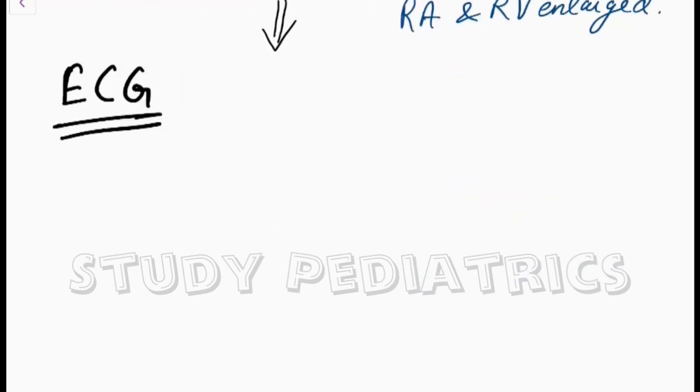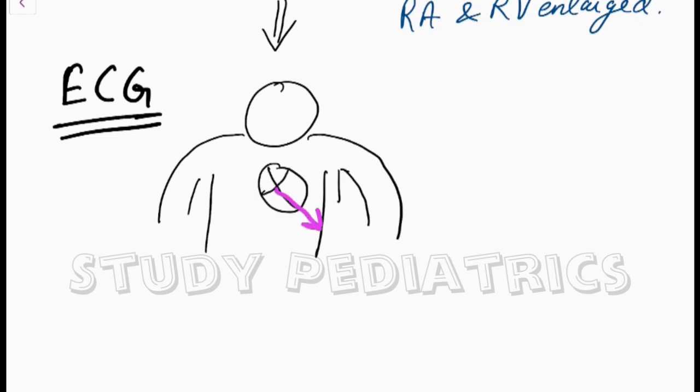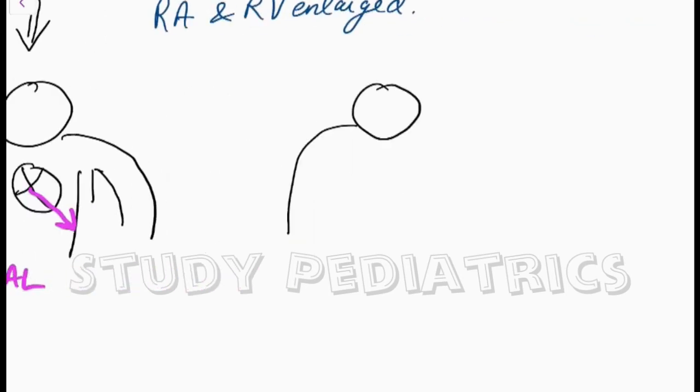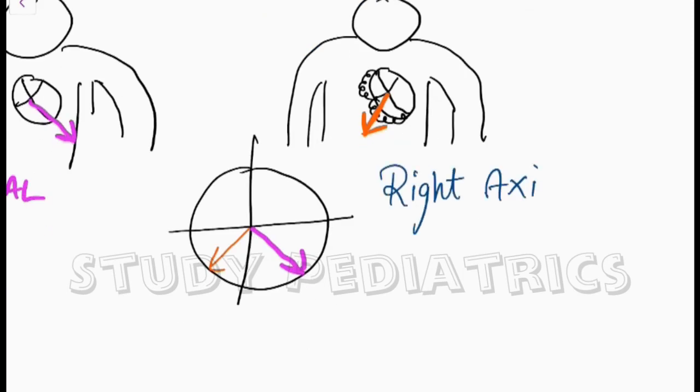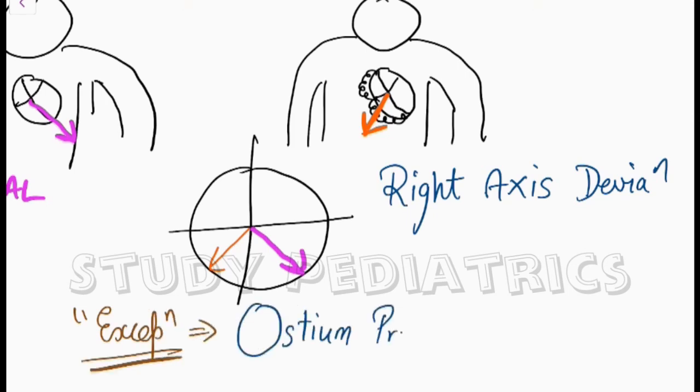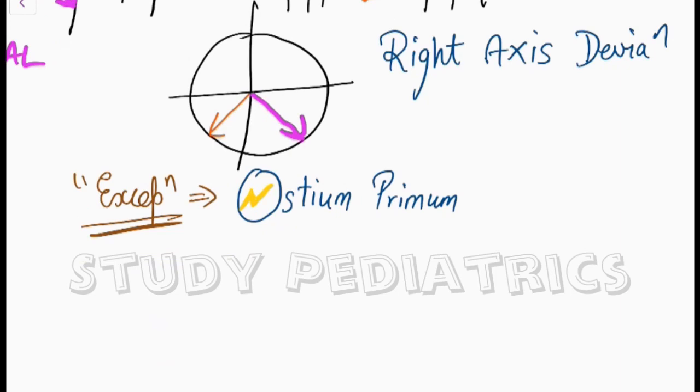Now let's see the ECG. In the ECG, as we know the cardiac vector is aligned down and left. But here, since there is enlargement of right atrium and right ventricle, there occurs right axis deviation, as can be seen here. But there is an exception to it. In case of ostium primum, since we know ostium primum has a conduction defect, therefore everything occurs in reverse. Hence, there occurs LAD or left axis deviation.